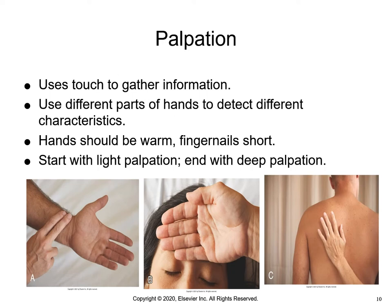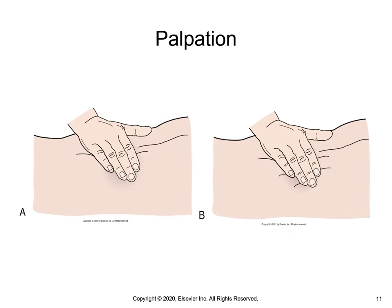Palpation is using the sense of touch to gather important data related to the patient. We want to make sure that the fingernails are kept short. In the photos, A is a radial pulse detected with the pads of the fingertips, which is the most sensitive part of the hand. The dorsum of the hand in B will help detect temperature variations in the skin. During light palpation, gentle pressure is applied against the underlying skin and tissues to help detect areas of irregularities and tenderness.